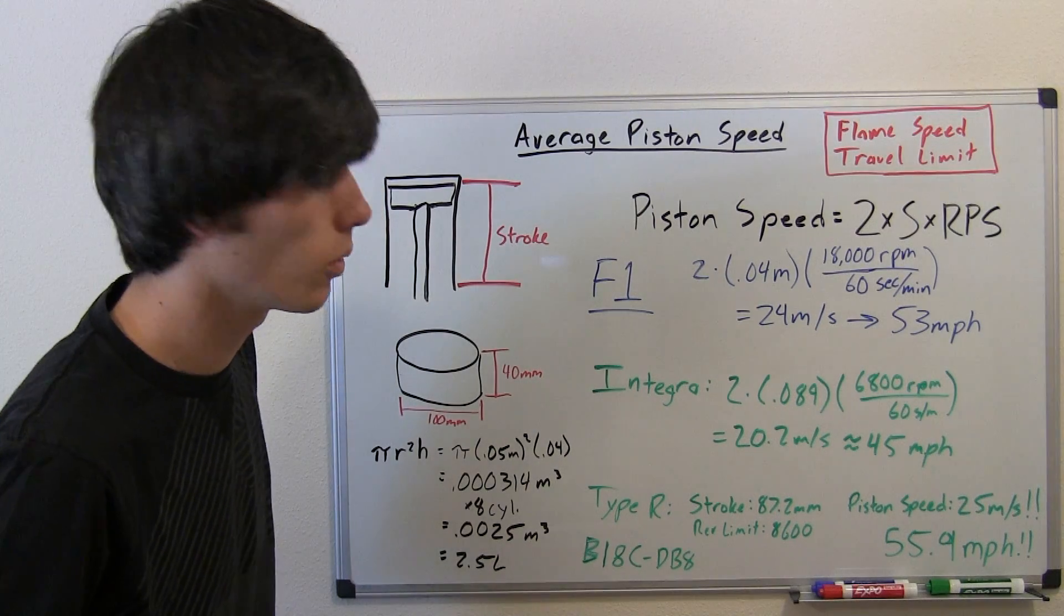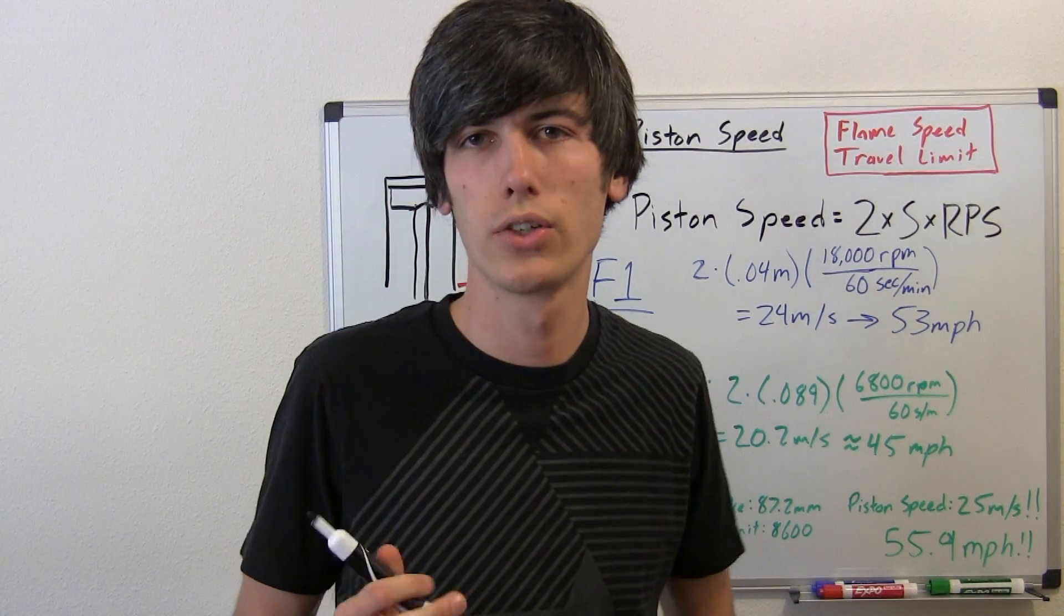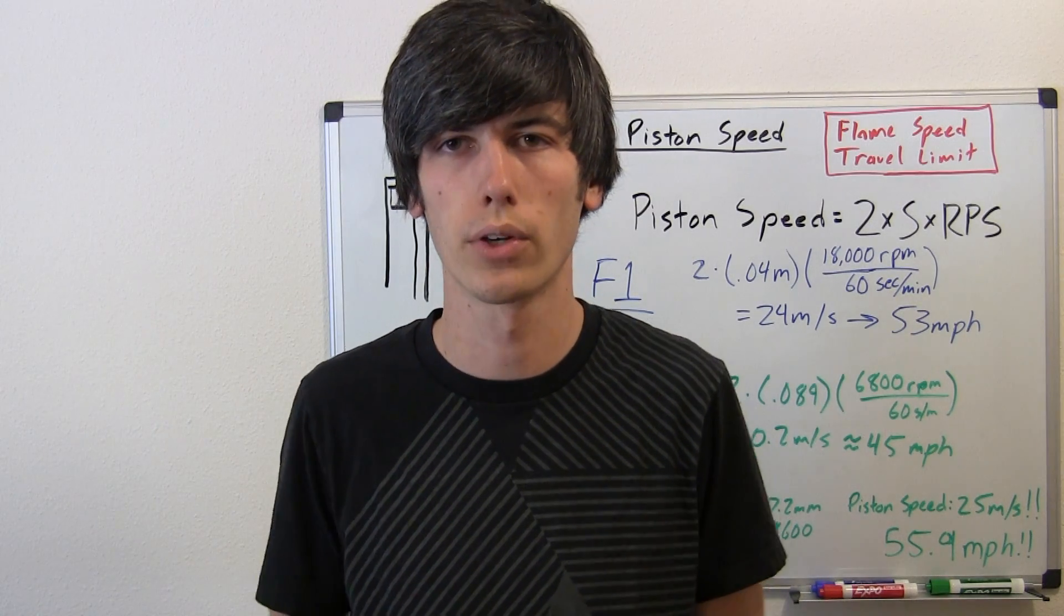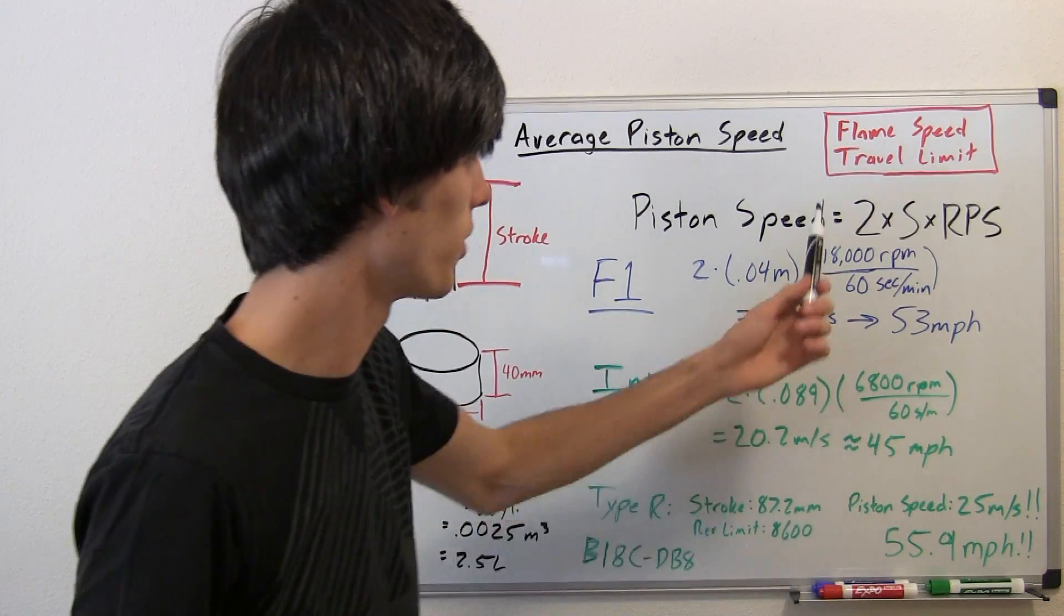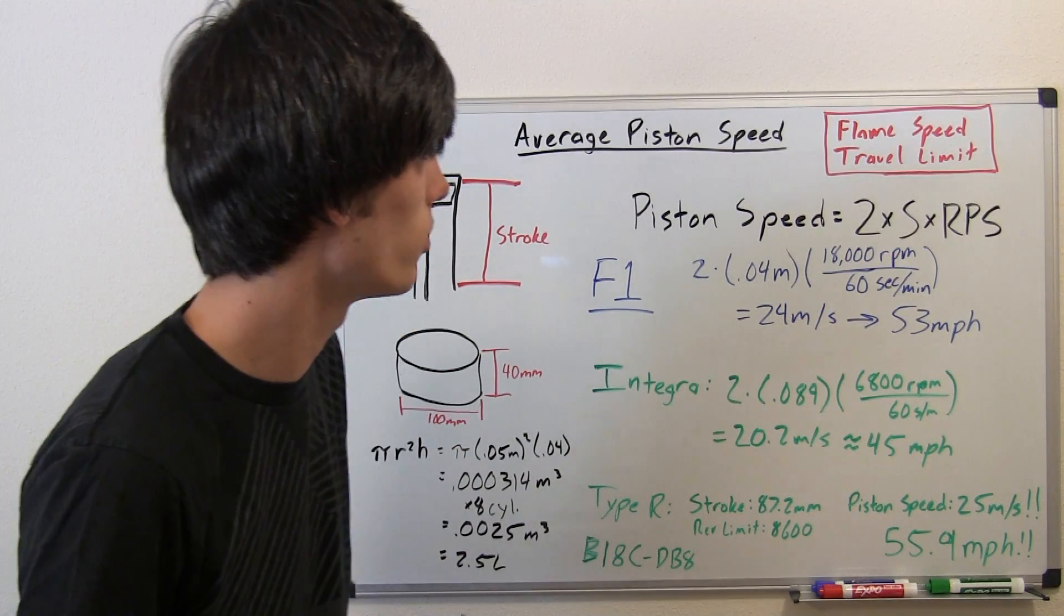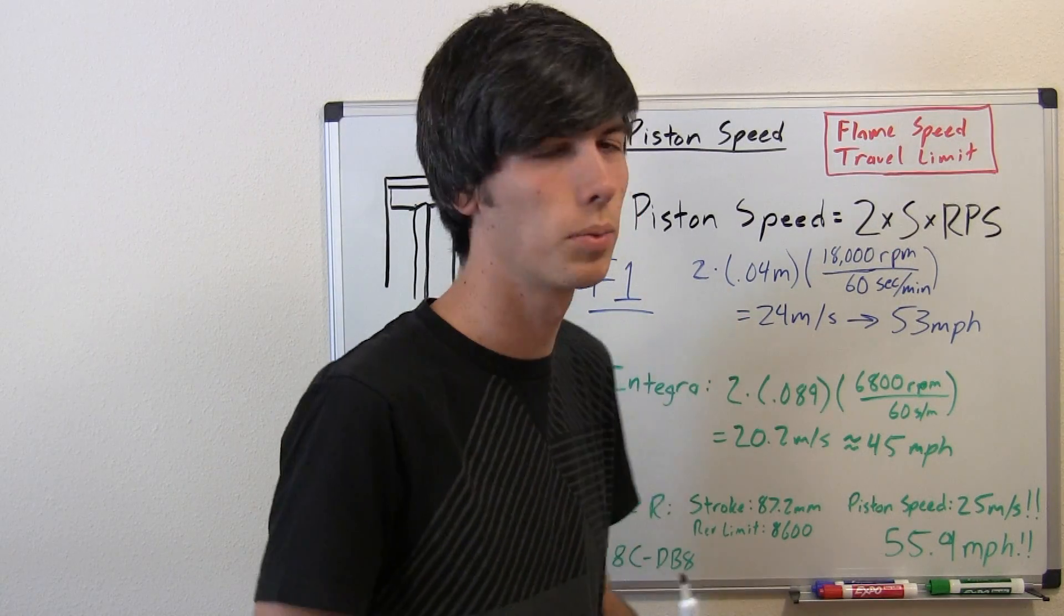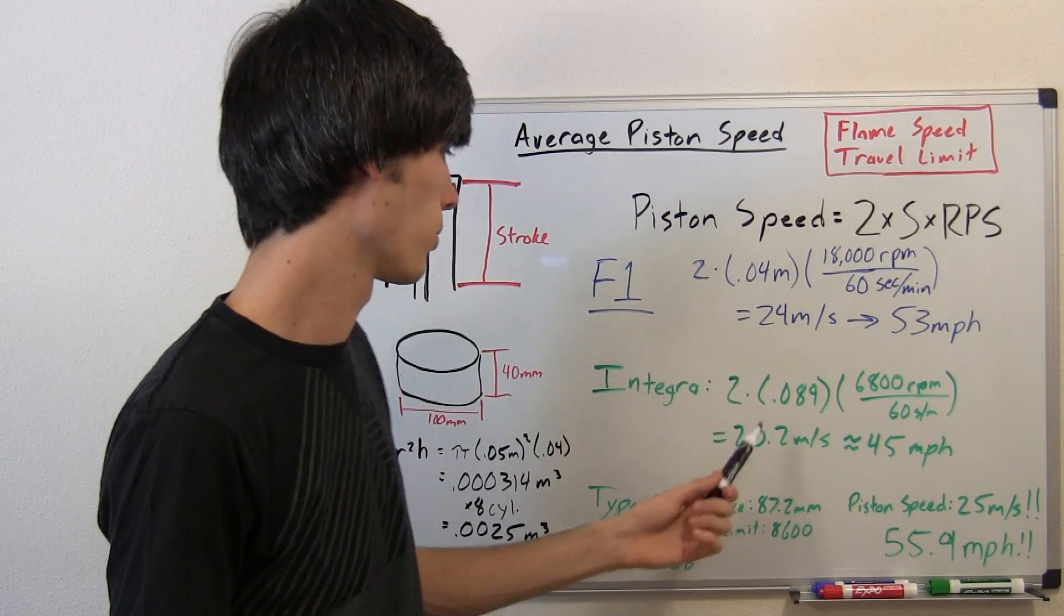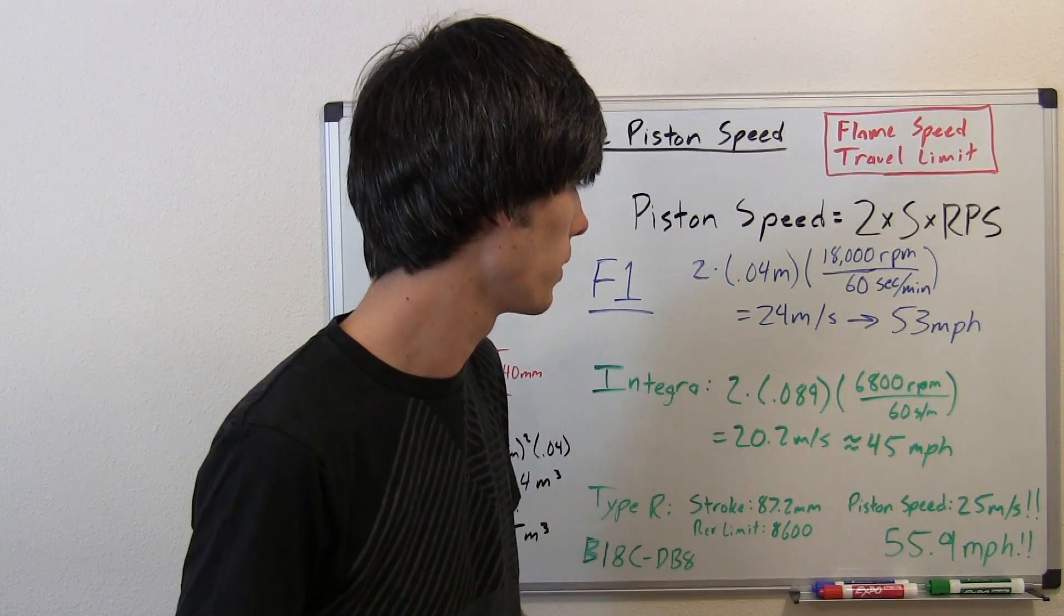One thing I challenge you to do: find out what your engine stroke is. Find out what your red line is, or your rev limit on your vehicle. Do the math. It's very simple. Just plug in two numbers, and get the average piston speed of your vehicle. See if you are faster than my incredible Acura Integra with 45 mph average piston speed.